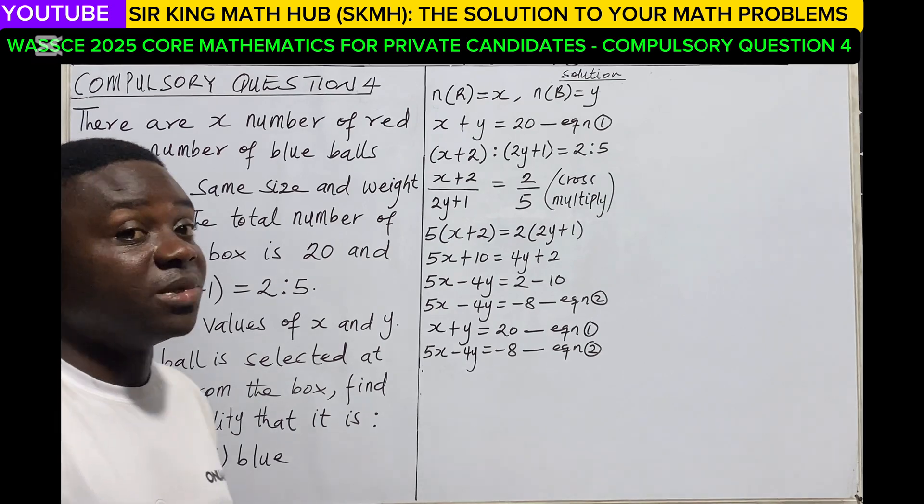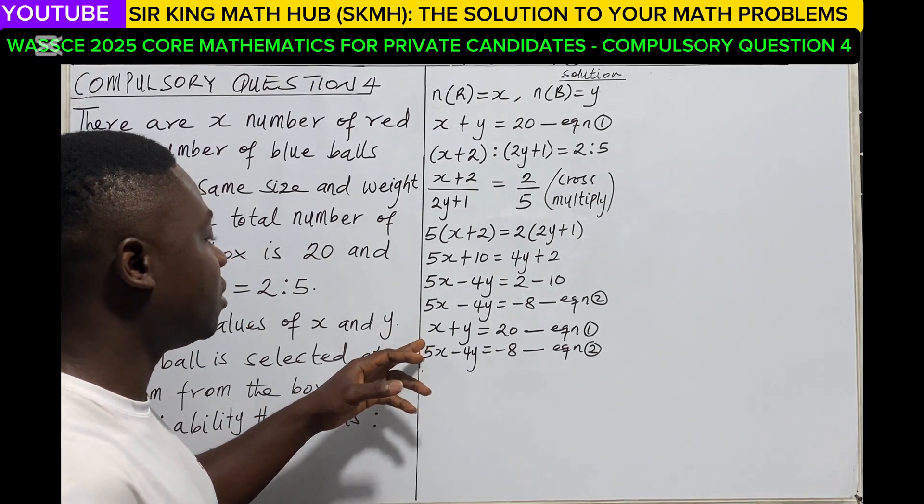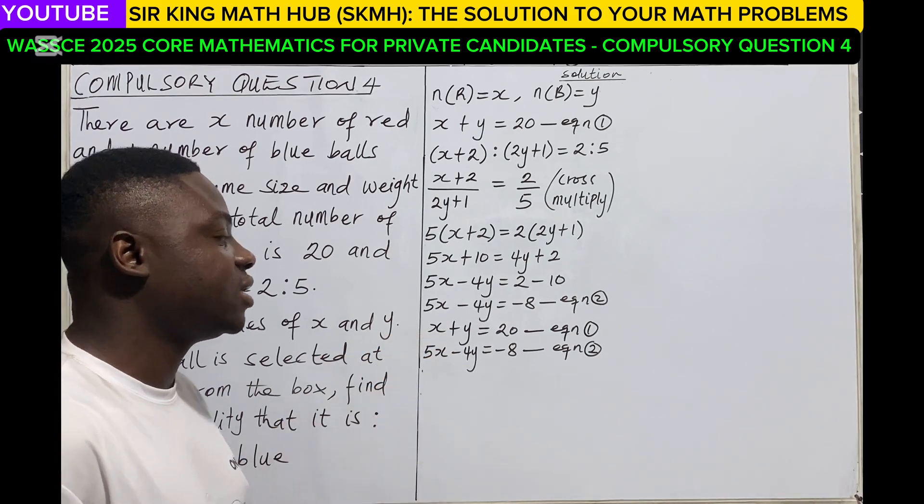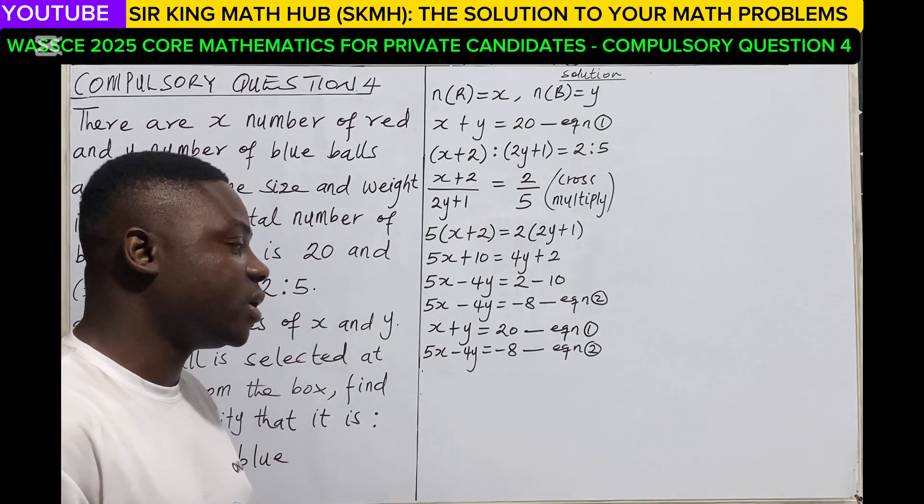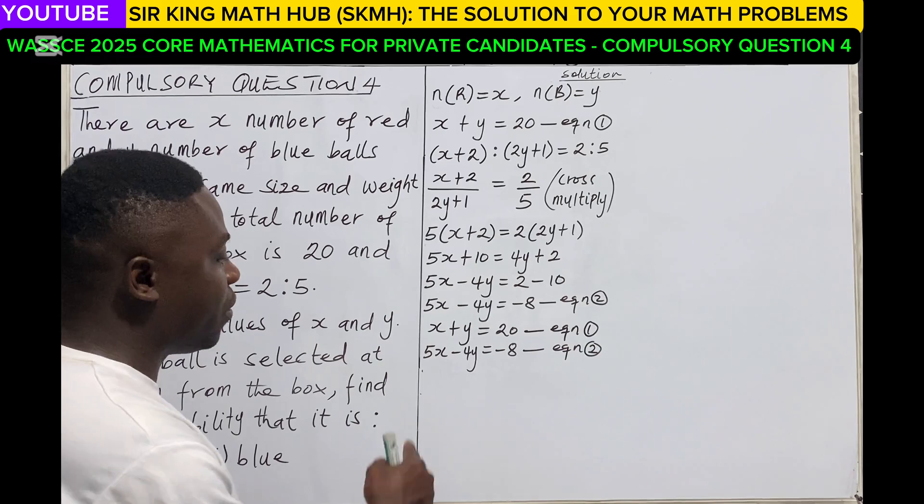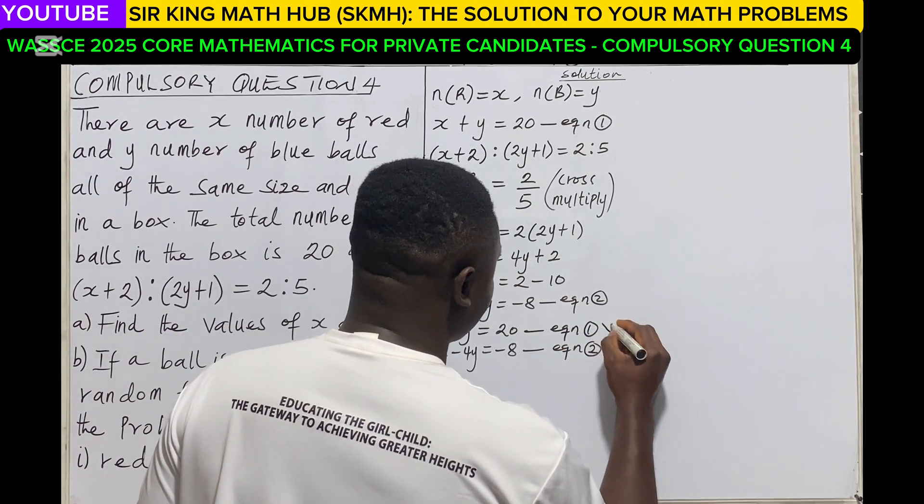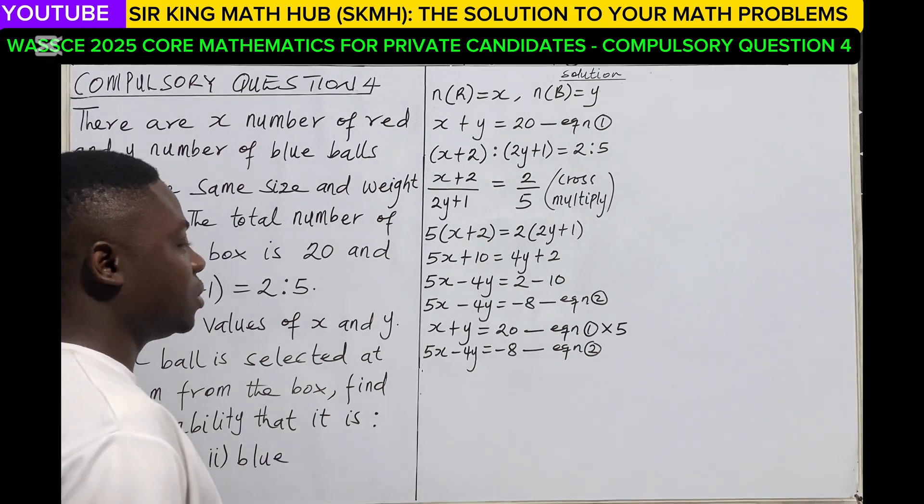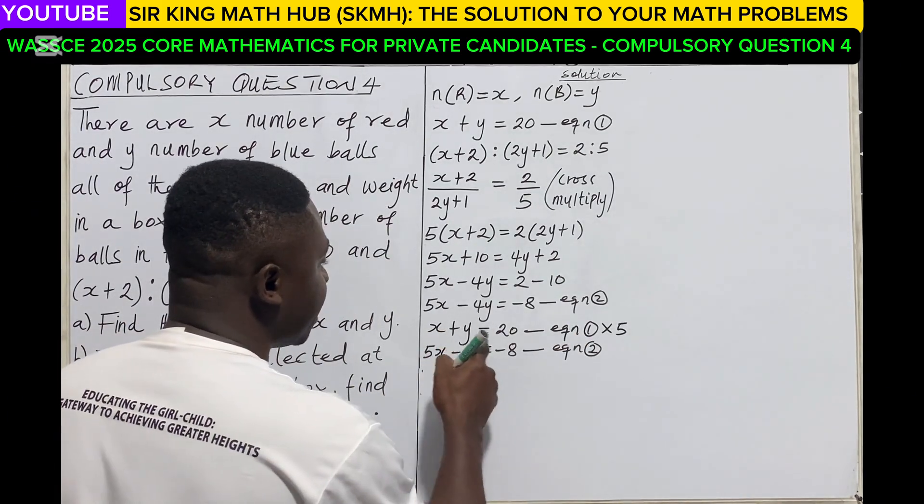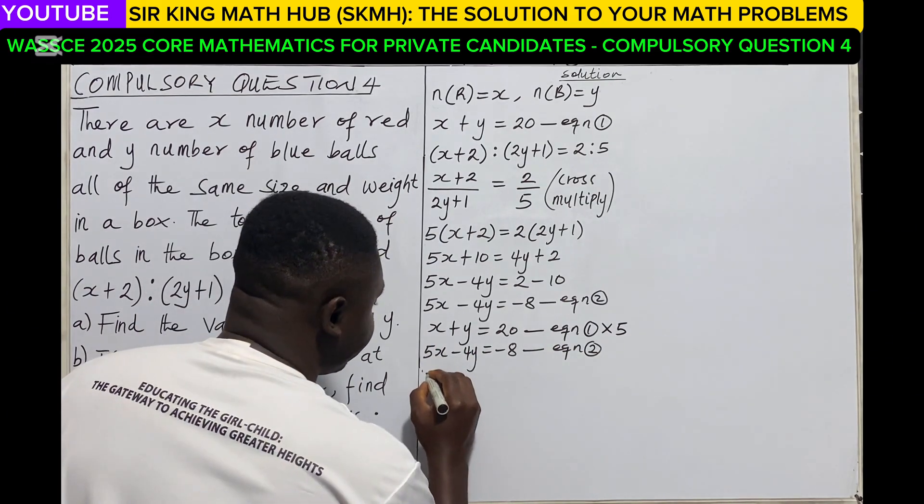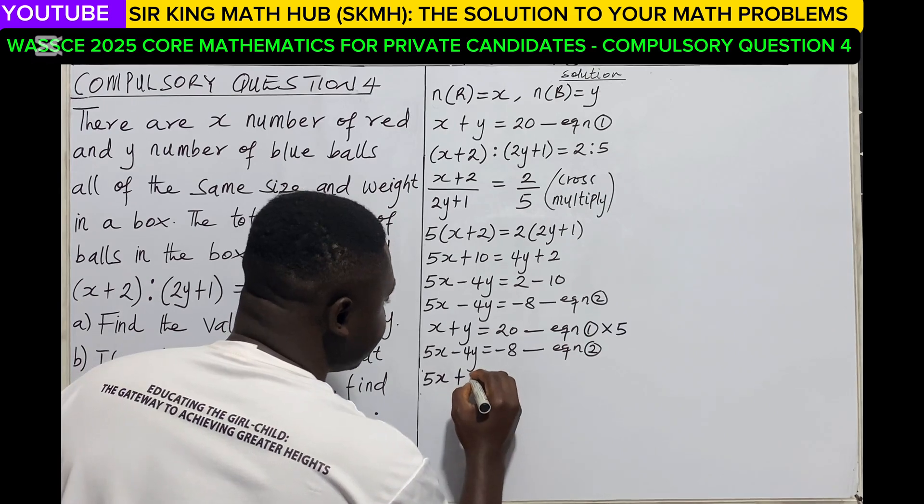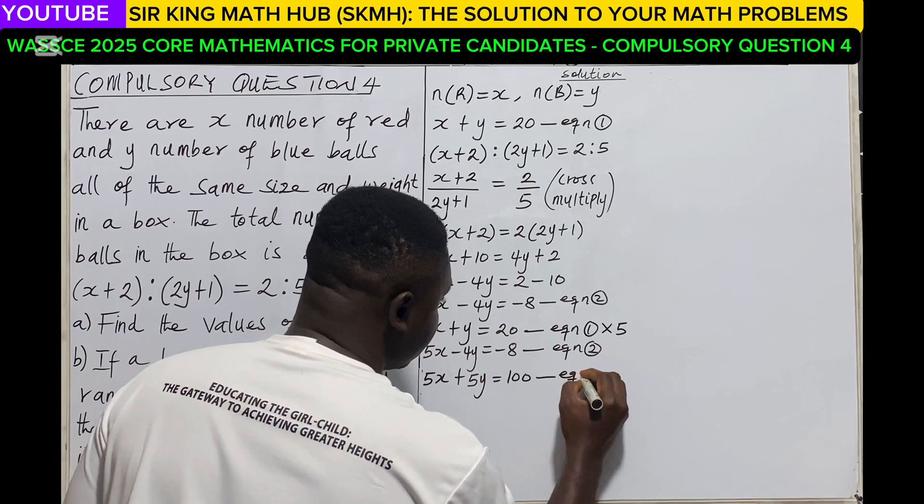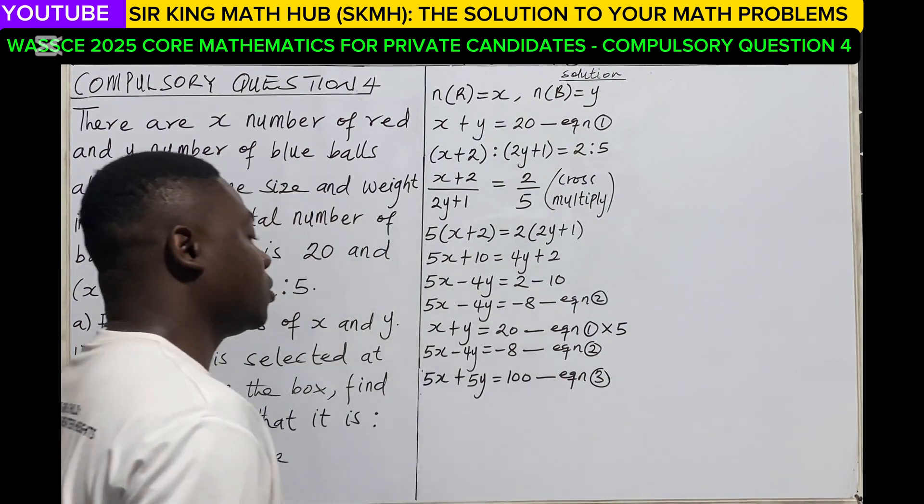So we are using the elimination method. But you can see that the coefficient of x in equation 1 and equation 2 are different, as well as the coefficient of y in equation 1 and equation 2 are also different. So I want to eliminate x. So I have to multiply equation 1 by 5 to get a third equation. So we have 5x plus 5y is equal to 5 multiplied by 20, that is 100. So this will be our third equation.